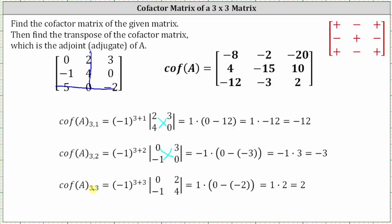And then finally, cofactor A sub three comma three is equal to negative one raised to the power of three plus three times the minor. If we eliminate row three, column three, the minor is the two by two determinant where row one is zero, two and row two is negative one, four. The sixth power of negative one is one. The determinant is zero minus negative two, which simplifies to two. One times two is two, the entry in row three, column three.